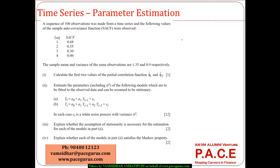Let's try to solve this numerical question involving a time series where majority of it is going towards the estimation of the parameters. We have a slight difference because we are given sample autocorrelation functions. A sequence of 100 observations was made from a time series and the following sample autocorrelation functions were observed. The mean and the variance of the sample observations are 1.35 and 0.9 respectively.